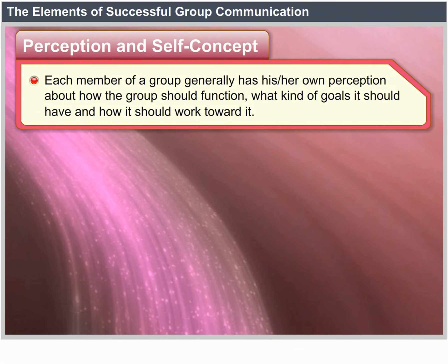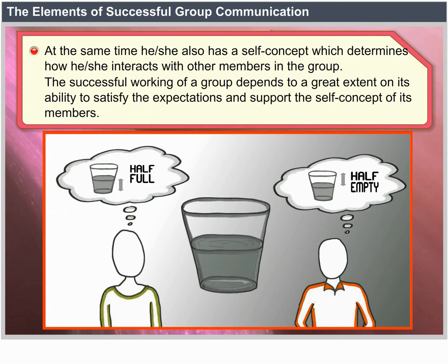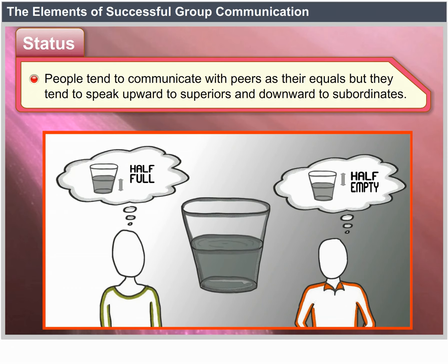Perception and Self-Concept. Each member of a group generally has his or her own perception about how the group should function, what kind of goals it should have and how it should work towards them. He or she also has a self-concept which determines how they will interact with others in the group. The successful working of a group depends to a great extent on its ability to satisfy the expectations and support the self-concept of its members. Status. Sometimes a few members of a group have a better social standing or are better qualified than the others. People tend to communicate with peers as equals, but speak upward to superiors and downward to subordinates.